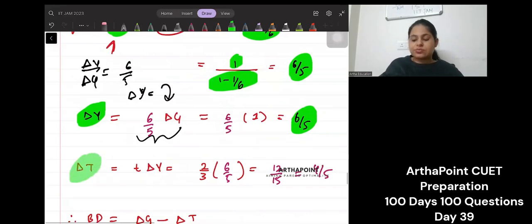Now, let's talk about change in T. So tax is given as proportionate tax, as a proportion of the income, right? So tax would have been ty, right? So change in T would have been T change in Y, right?